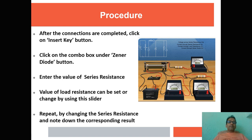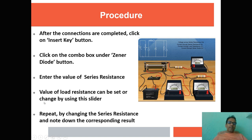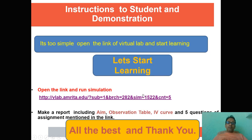Now let's start the procedure. We need to make the circuit connections using the circuit diagram. The components include a voltmeter, ammeter, diode, key, battery, and two resistances. After completing the connection, click the combo box under the diode button, enter the value of series resistance, and change it using the slider. Repeat by changing the series resistance and note down the corresponding results.